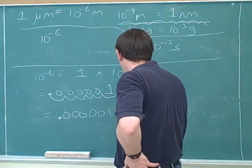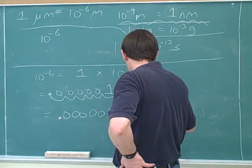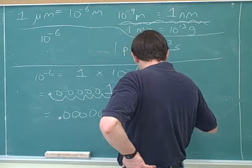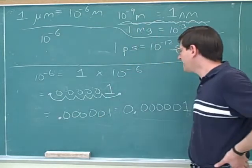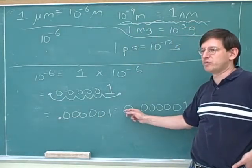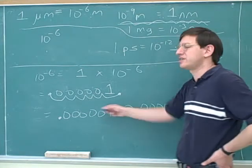Also something that confuses people a lot is that in the textbook, this will be written like this. It's just a matter of taste whether you put a zero to the left of the decimal point. In the textbook they do this, but these are the same number.